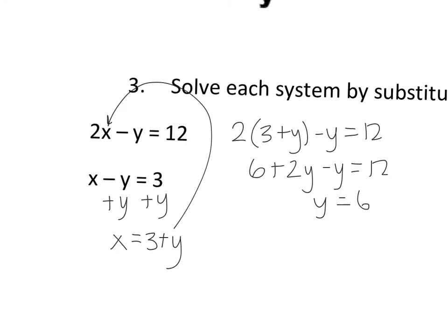So if y equals 6, then x is x minus 6 equals 3. So x has to be 9. And I'm going to write it as an ordered pair. So it's going to be 9, 6.